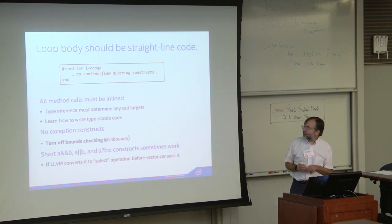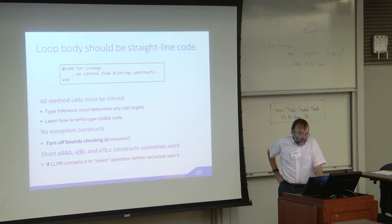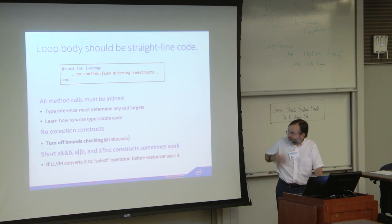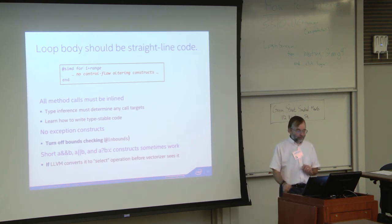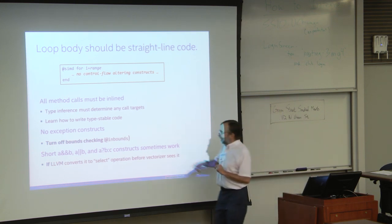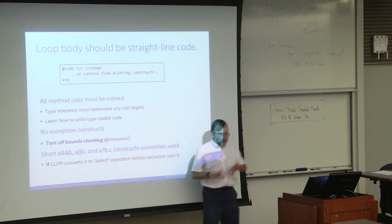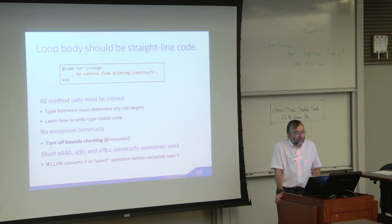The loop body has to be straight-line code. Method calls have to be all inlined, so you have to be aware of the capabilities of the inliner. The type inference has to do its thing on inlined call targets, so you have to understand the details of writing type-stable code. You have to turn off bounds checks and you can't have anything that might throw an exception. That rules out vectorization of integer division because of the divide-by-zero problem. As the exception proves the rule, occasionally slightly non-straight-line code can be vectorized — if you have really simple logical ANDs, logical ORs, or ternary operators, they will sometimes vectorize. The ifelse function, which is a function version of the ternary construct, lowers directly to a select and may help in some cases.